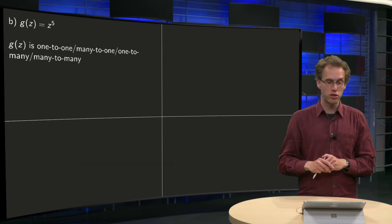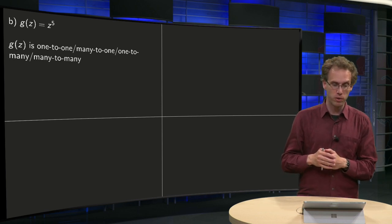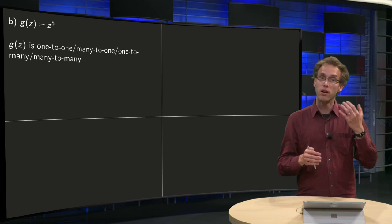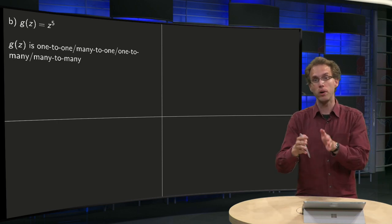What about z to the power of 5, our second function? Is this one one to one, many to one, one to many or many to many? First question, is our function to one or to many?